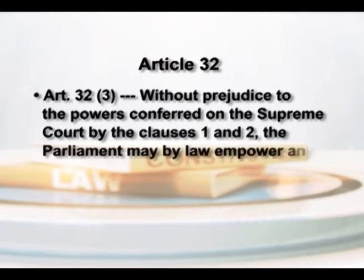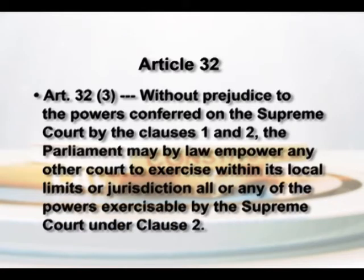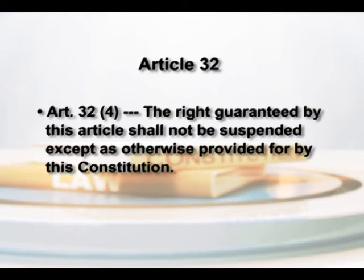Article 32 Clause 3 says that without prejudice to the powers conferred on the Supreme Court by Clauses 1 and 2, Parliament may by law empower any other court to exercise within its local limits of jurisdiction all or any of the powers exercisable by the Supreme Court under Clause 2. Article 32 Clause 4 reads that the right guaranteed by this article shall not be suspended except as otherwise provided by this Constitution. Article 32 was referred to as the very soul of the Constitution by Dr. B.R. Ambedkar and provides for constitutional remedies against violation of fundamental rights as enumerated in Part 3.